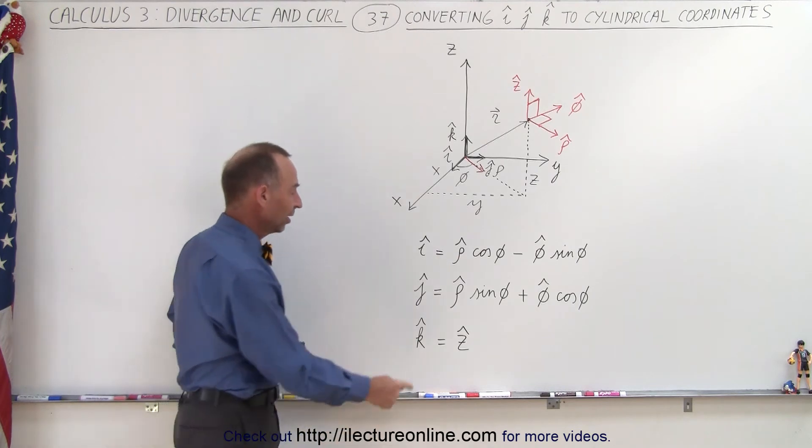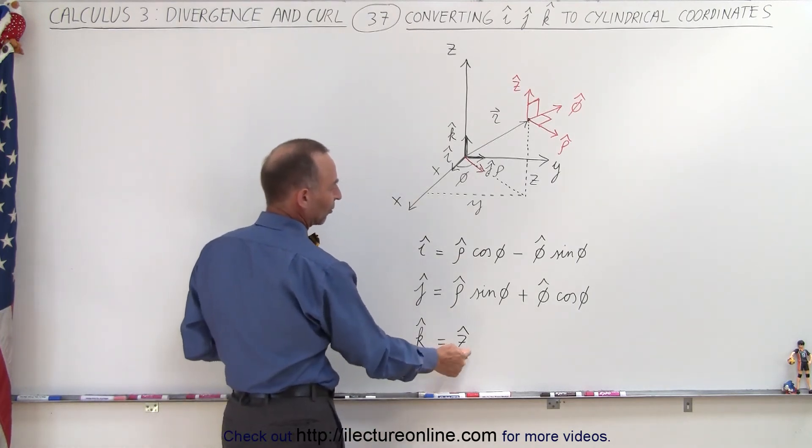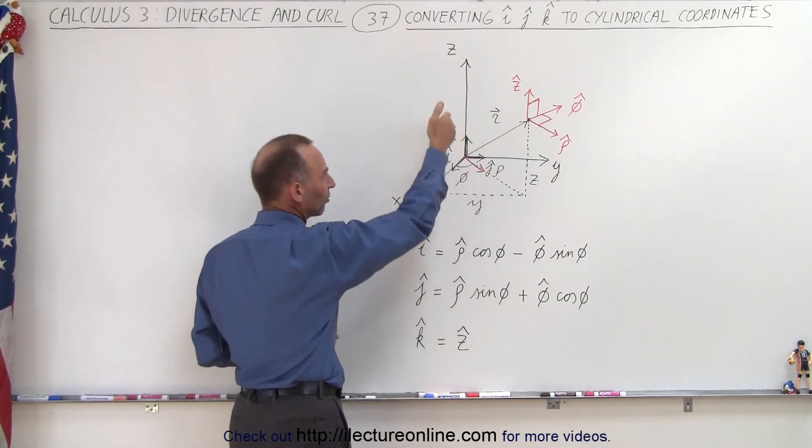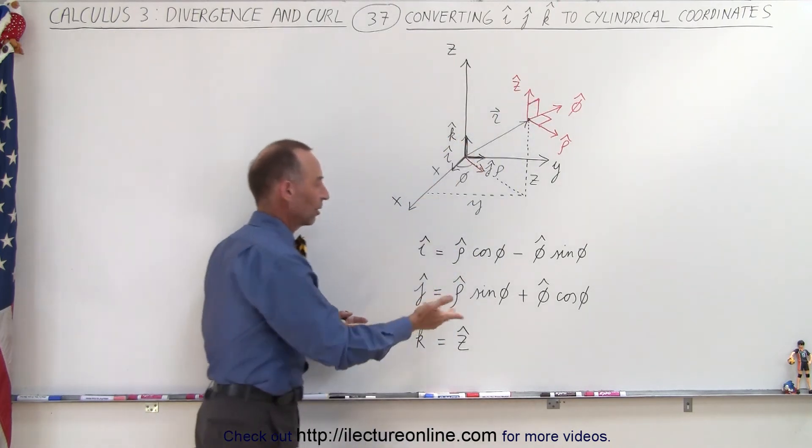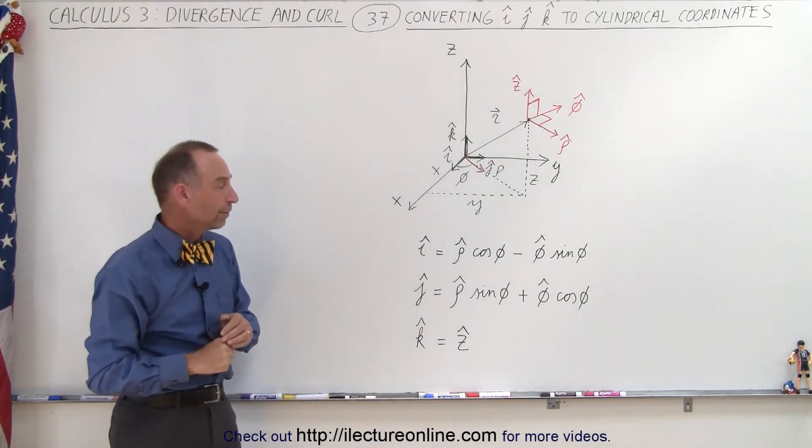And of course in the z direction, the k component is the same as the z component because they point in the same direction, so no problem there. These are the same unit vectors, and we can just relate the one to the other.